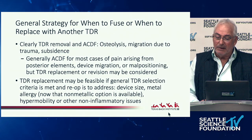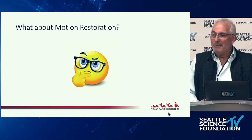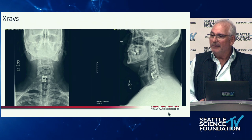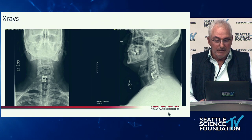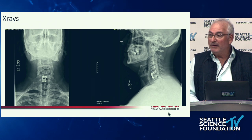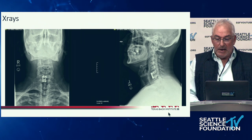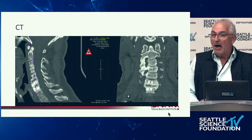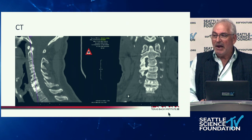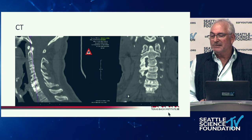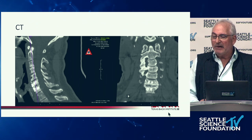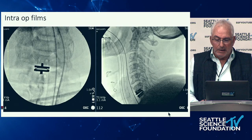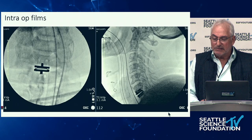What about motion restoration from a prior fusion? This is a rare scenario at our center — we've done an N of three, so the LA group is better positioned to discuss it. I'll show one case that went well: a patient with a nonunion and relatively well-preserved end plates. You should tell patients there's a good chance you'll still need to fuse because finding pristine end plates in this scenario is pretty rare. But we were able to revise this one, mobilize the disc, and restore motion.